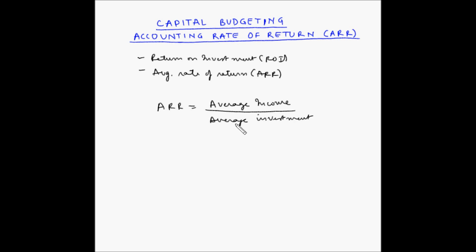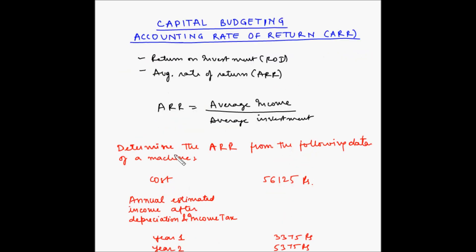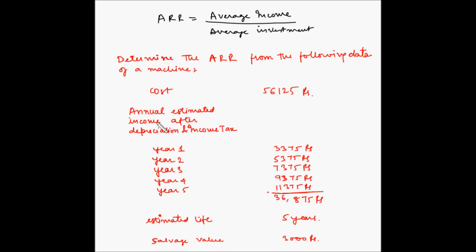Some people also use initial investment instead of average investment. Now let us consider an example to understand this method. The example is as shown here in red: determine the ARR from the following data of a machine. We have a machine which is going to cost us 56,125 rupees. The annual estimated income after depreciation and income tax has been given for the next five years — this is the additional income that will be generated because of this machine.